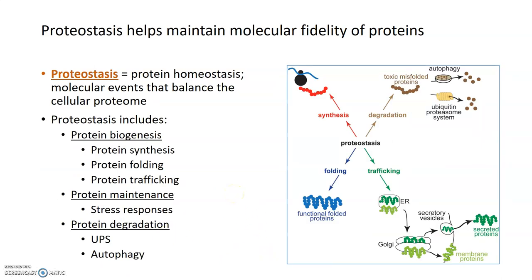There are some mechanisms in place in cells that help maintain molecular fidelity of proteins throughout the lifespan, keeping that molecular fidelity as high as possible through development and maturity. But ultimately, those fail in senescence and lead to decreased molecular fidelity.